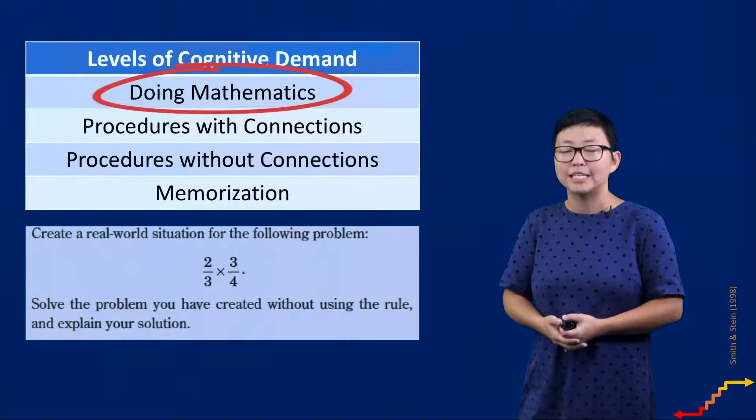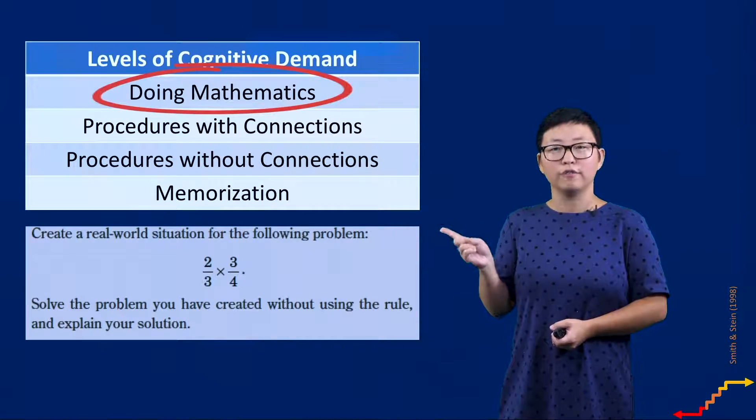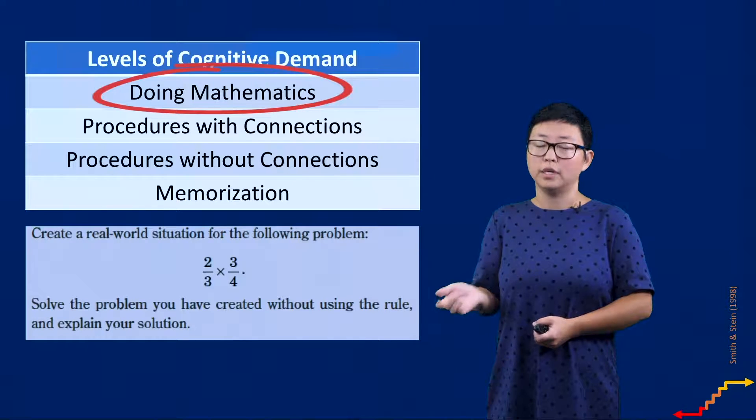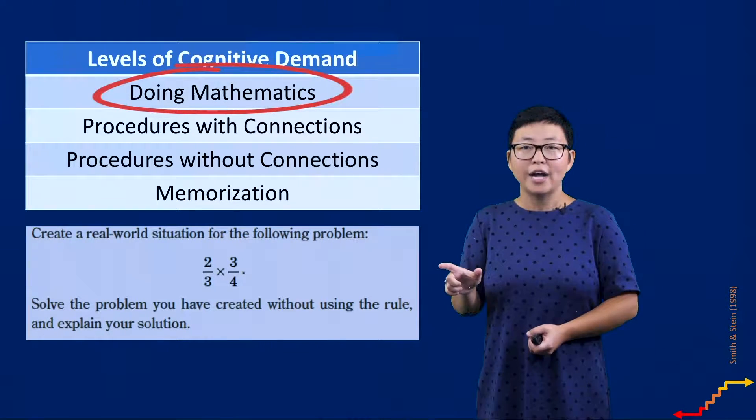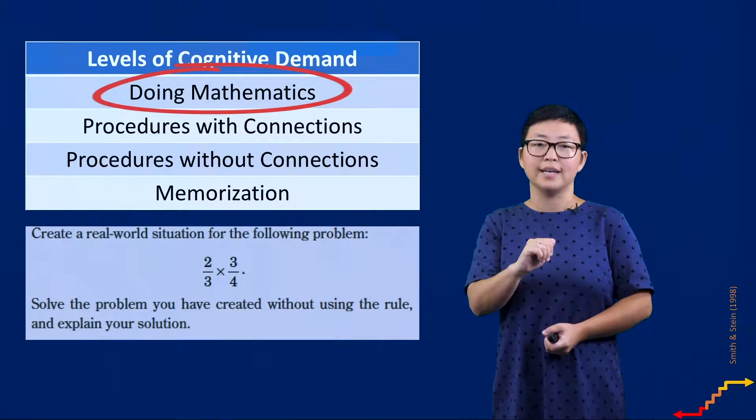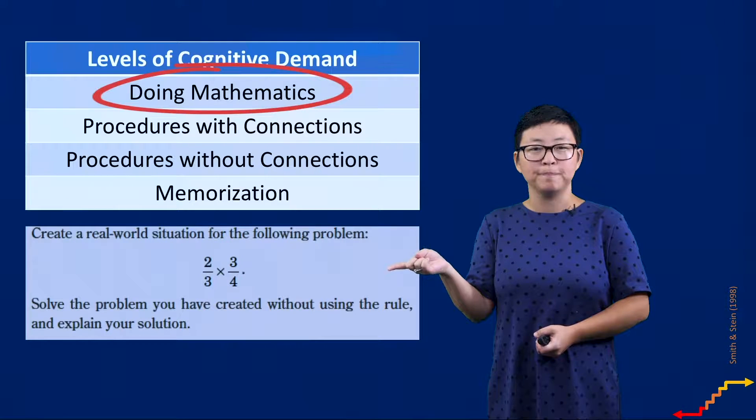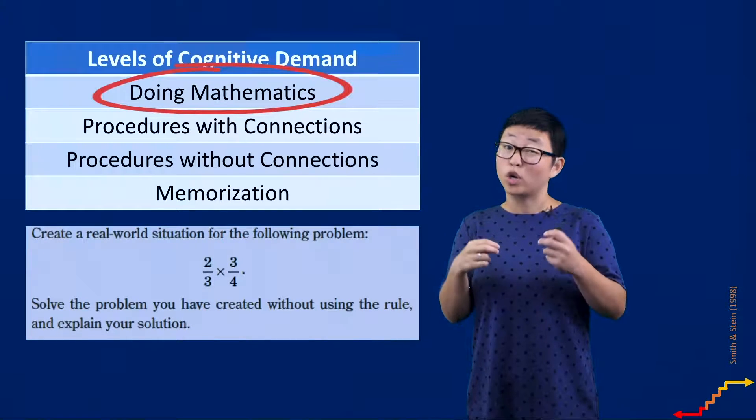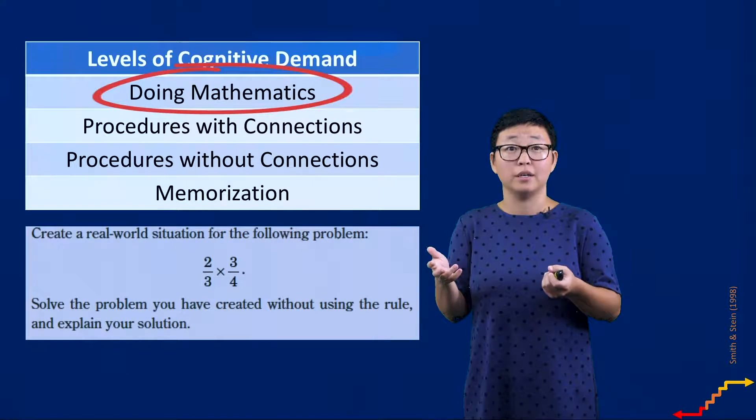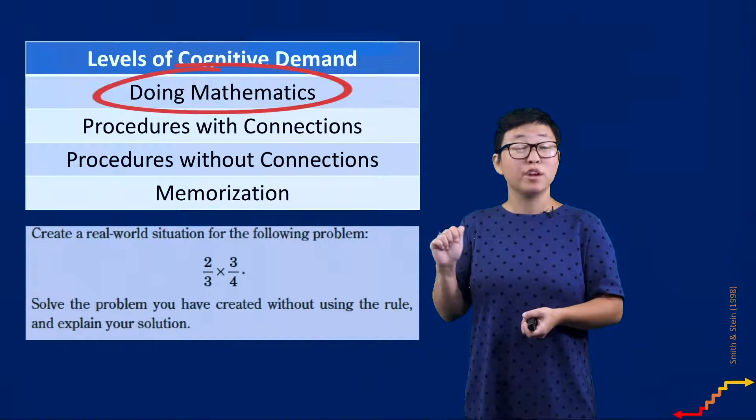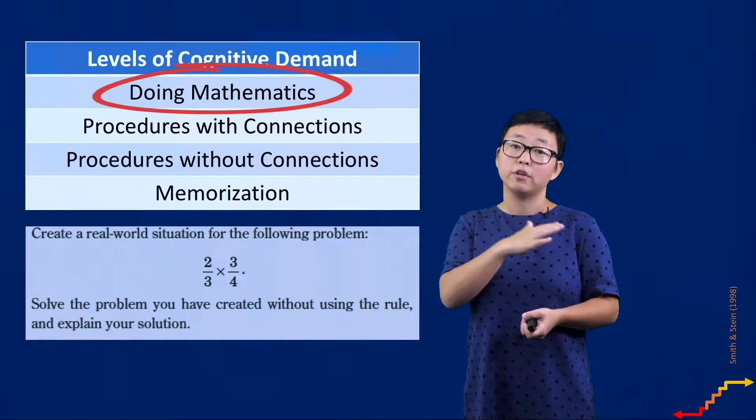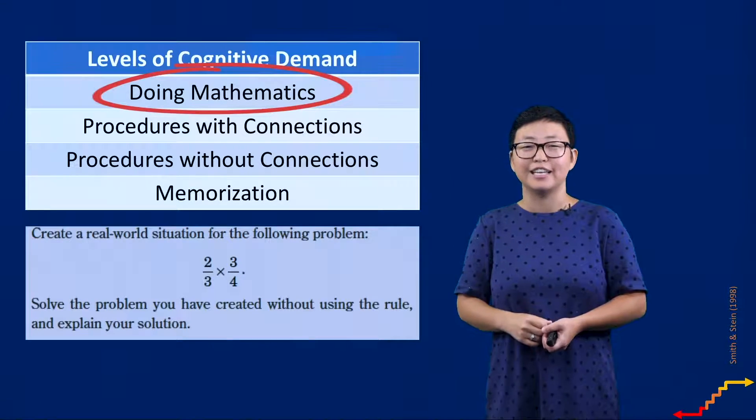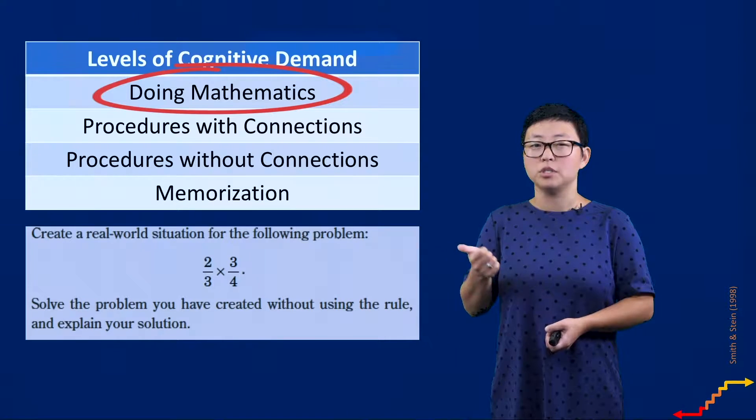An example of this type of task would be here. Create a real-world situation for the following problem: two-thirds times three-fourths. Solve the problem you have created without using the rule and explain your solution. Here we're actually asking students to bring their own context, to provide what a reasonable context would be for this problem. This is a really interesting task for many reasons. First, because by asking students to generate a context that works for this problem really lets you know whether or not they understand what's going on mathematically in this problem. There are some contexts that just wouldn't make sense for this problem, while there are others that would lend themselves more naturally. By asking students to create the context, you're really getting insight into what they're thinking about and what they understand multiplying fractions to be.